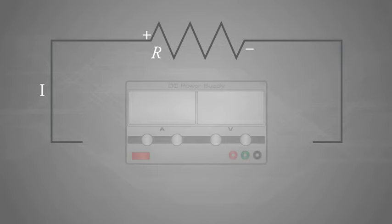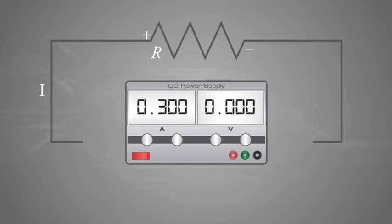The DC power supply is a commonly used device in the lab. This device has the ability to create different amounts of electromotive force. As the voltage is increased, the potential difference between the terminals is increased.